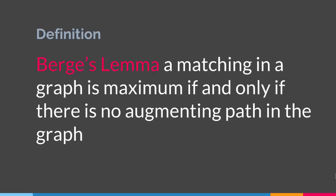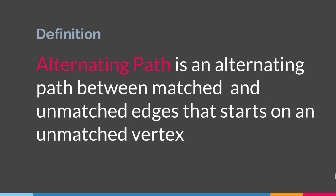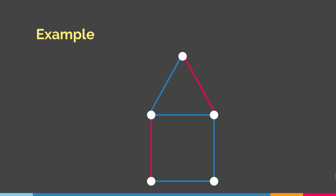Before we dissect what this means we have to talk about an augmenting path. For a graph match we have augmenting path and we have alternating path. An alternating path is an alternating path between matched and unmatched edges that starts on an unmatched vertex. So let's say we have a graph like this and we start a match from this particular vertex, then we go up and end it right there. This is an alternating path because we started on an unmatched vertex and the path alternates between unmatched and matched edges.